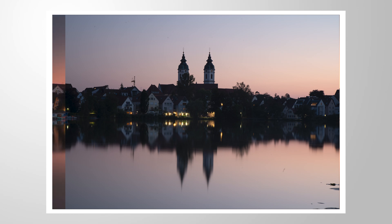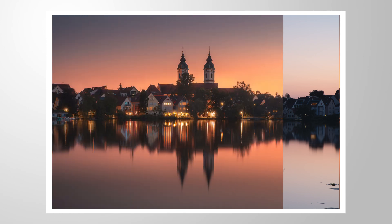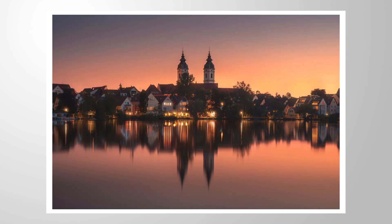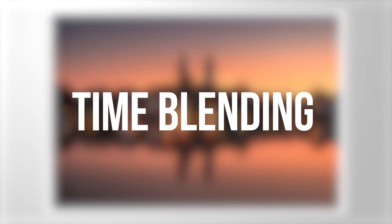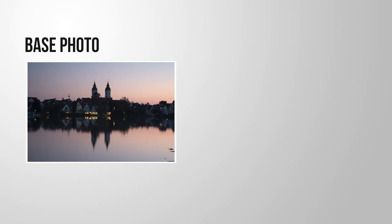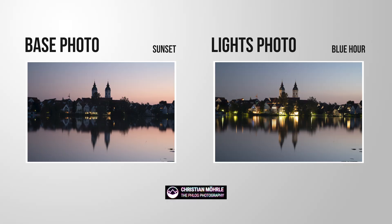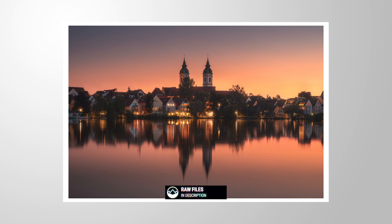Let me show you how to do time blending with Photoshop. Time blending is nothing more than taking two images shot at different times but from the same position and blending them together. This is super easy. If you want to follow along, you can find these two RAW files I'm using for this video in the description down below. Now let's jump into it.